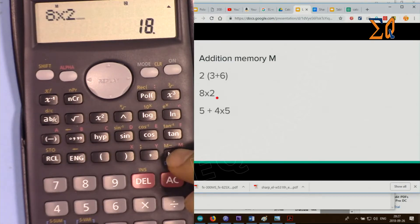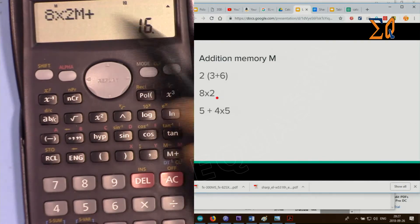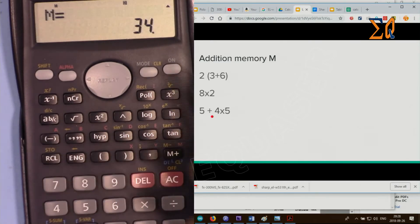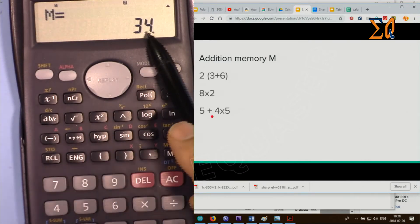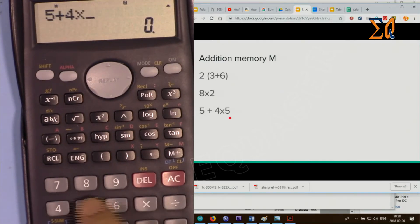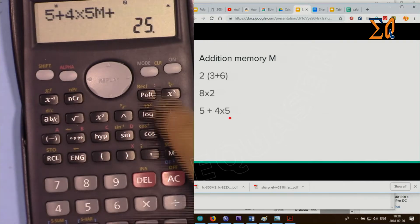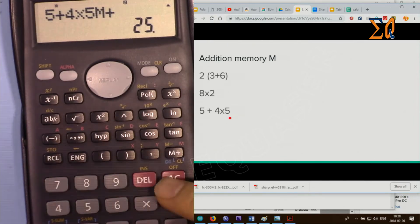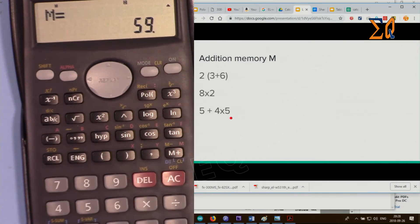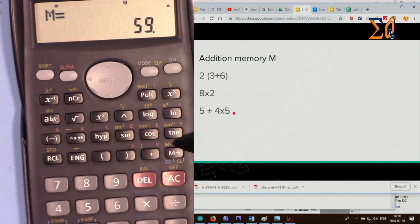And then plus, this will be added on top of the memory. You see memory plus. If you want to recall it at this point, just recall M. This is the value. If you want to continue, 5 plus 4 times 5, and then plus, it has been stored there. To recall it, just press recall M, and that is the value.